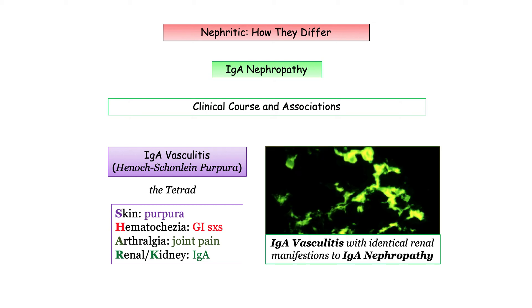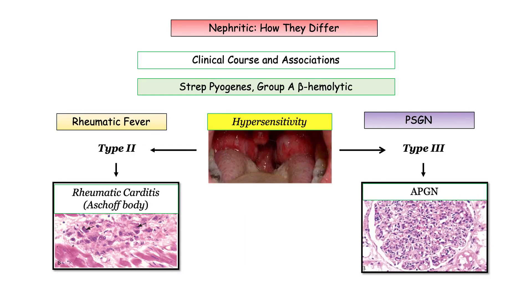Make sure you can identify IgA nephropathy in the setting of Henoch-Schönlein Purpura, also known as IgA vasculitis. In so far as loose ends with post-streptococcal, you will need to identify the type of hypersensitivity reaction associated with immunologic injury. In rheumatic fever, the immune injury is related to molecular mimicry and cross-reactivity against fixed tissue targets — this is a type 2 hypersensitivity reaction. In post-streptococcal glomerulonephritis, the damage is related to circulating immune complexes, consistent with type 3 hypersensitivity. If they ask, assume it to be a type 3 reaction.